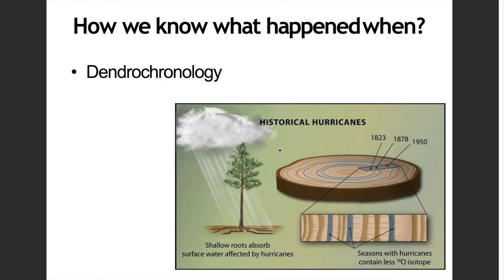Aside from stratigraphy and radiocarbon dating, we also have dendrochronology — essentially measuring the growth rings or the oxygen-18 isotopes in your trees. Since when there is a high occurrence of hurricanes, your growth rings contain less O-18 isotopes. You need to cut open your trees and look for certain growth rings. That's your dendrochronology.